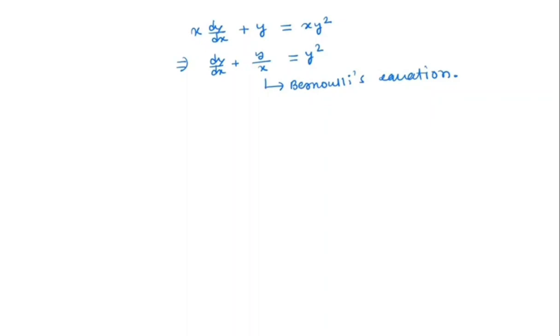So, come back to the problem. What we do, we will divide both side of this equation by y square. So, we get y to the power minus 2 dy/dx plus 1 by xy is equal to 1.